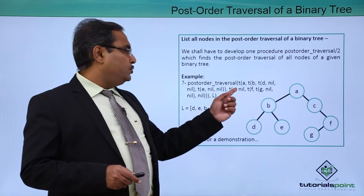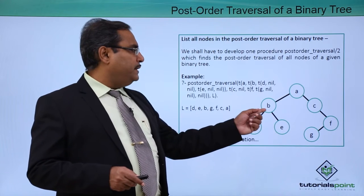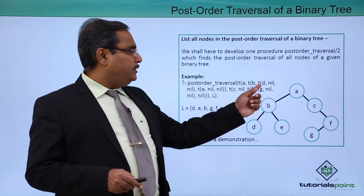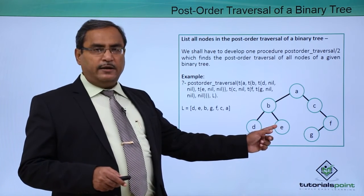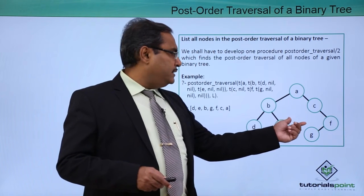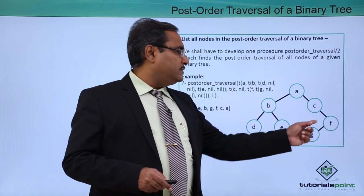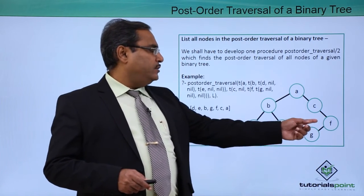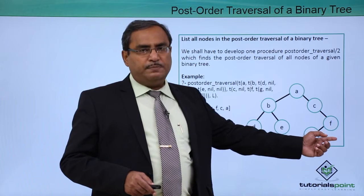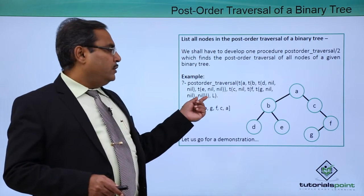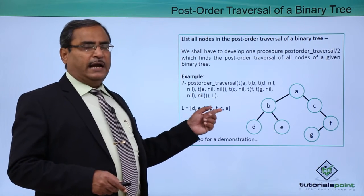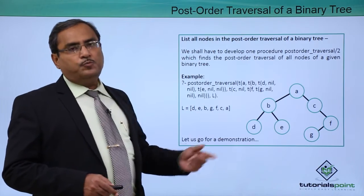A is the root, having a left subtree where B is the root. B has D as the left leaf node — D, nil, nil — and E as the right leaf node — E, nil, nil. Then C has nil as its left child and F as its right child. F has G as the left child and nil as the right child. In this way the tree has been expressed, and giving this as input produces the expected output.